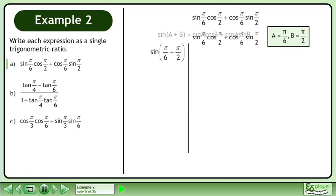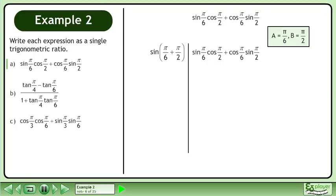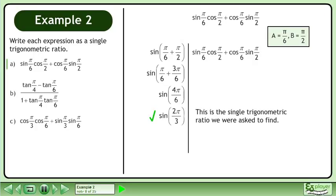Plug the angles into the left side. Also rewrite the original expression on the right side. Get a common denominator and add the fractions. The left side is sin(π/3). This is a single trigonometric ratio we were asked to find.